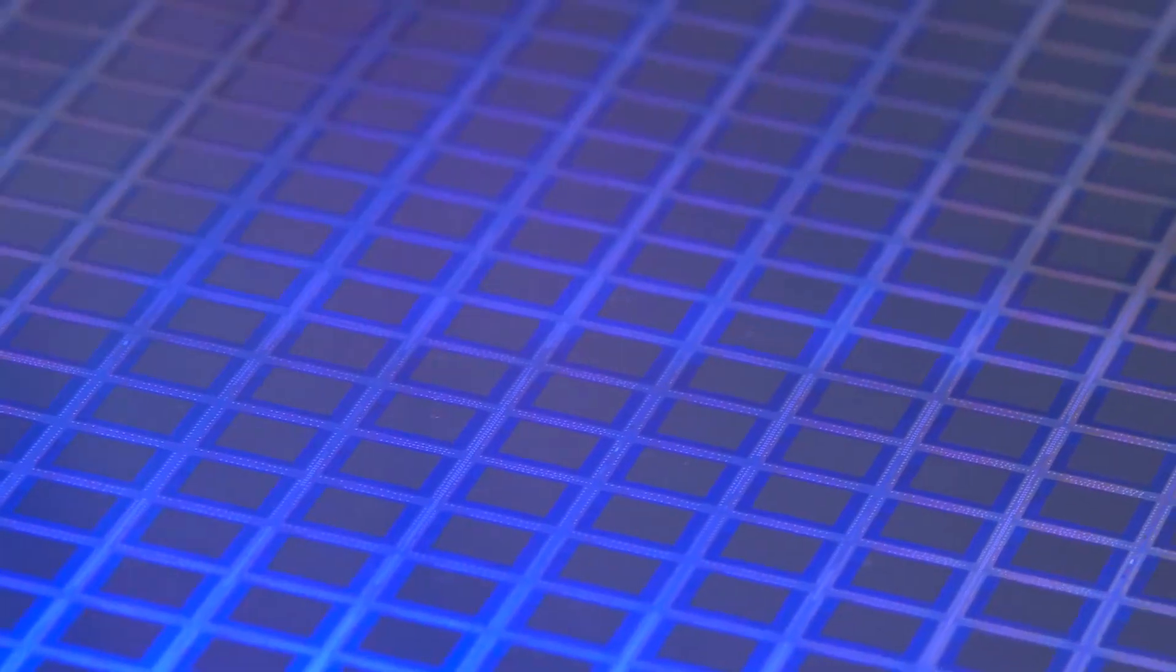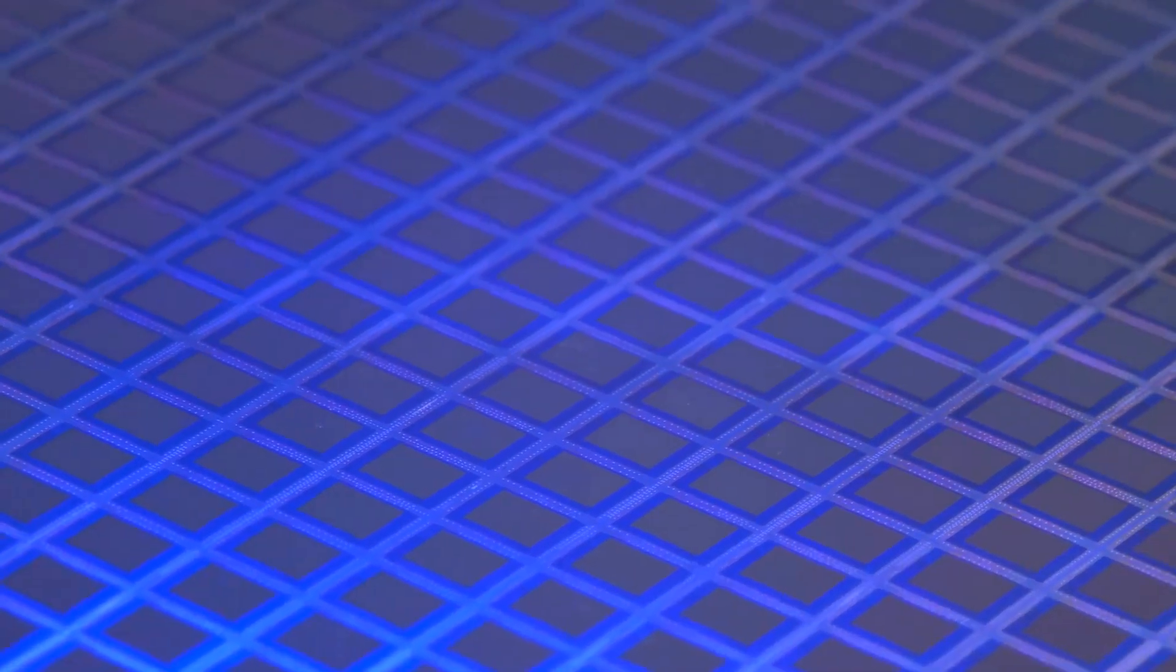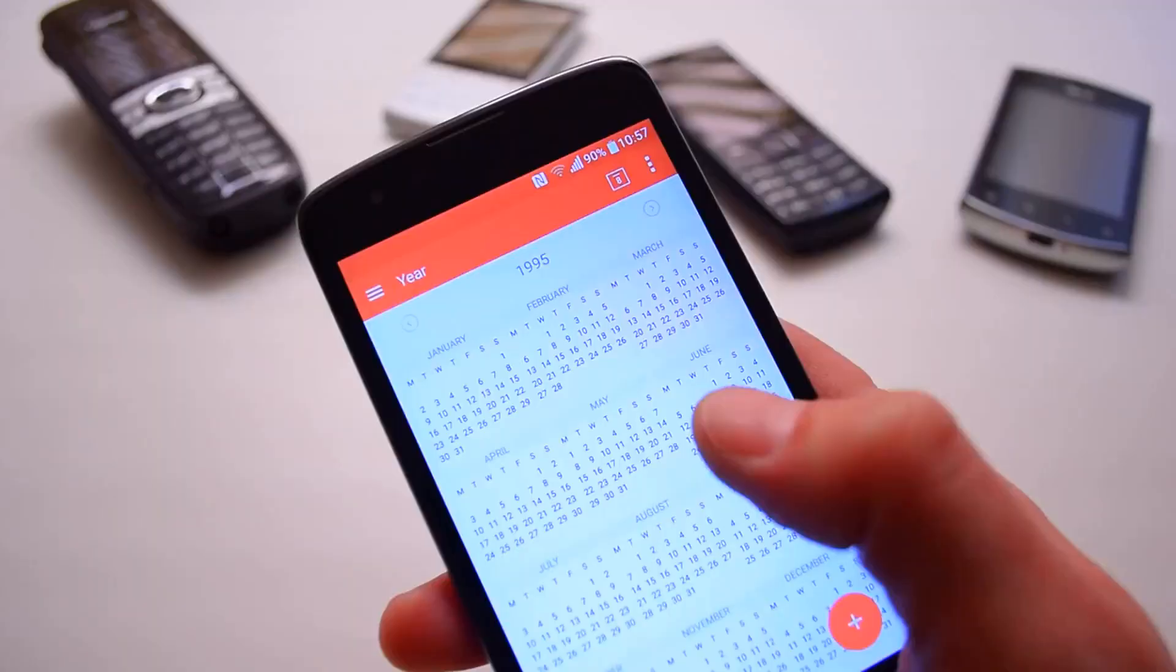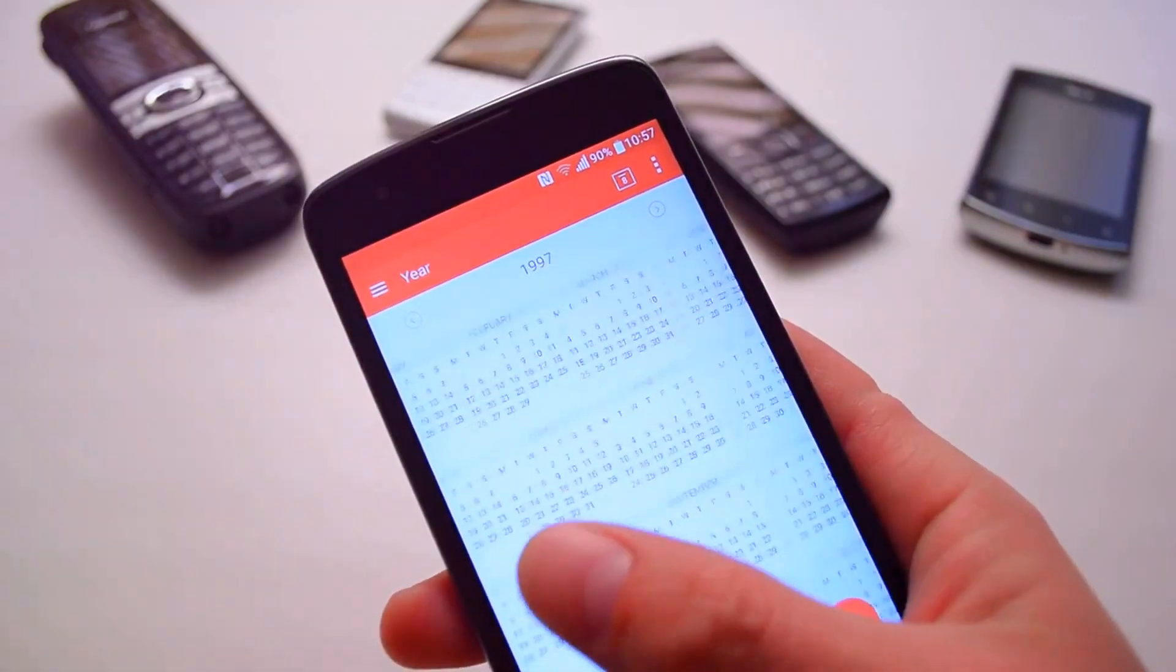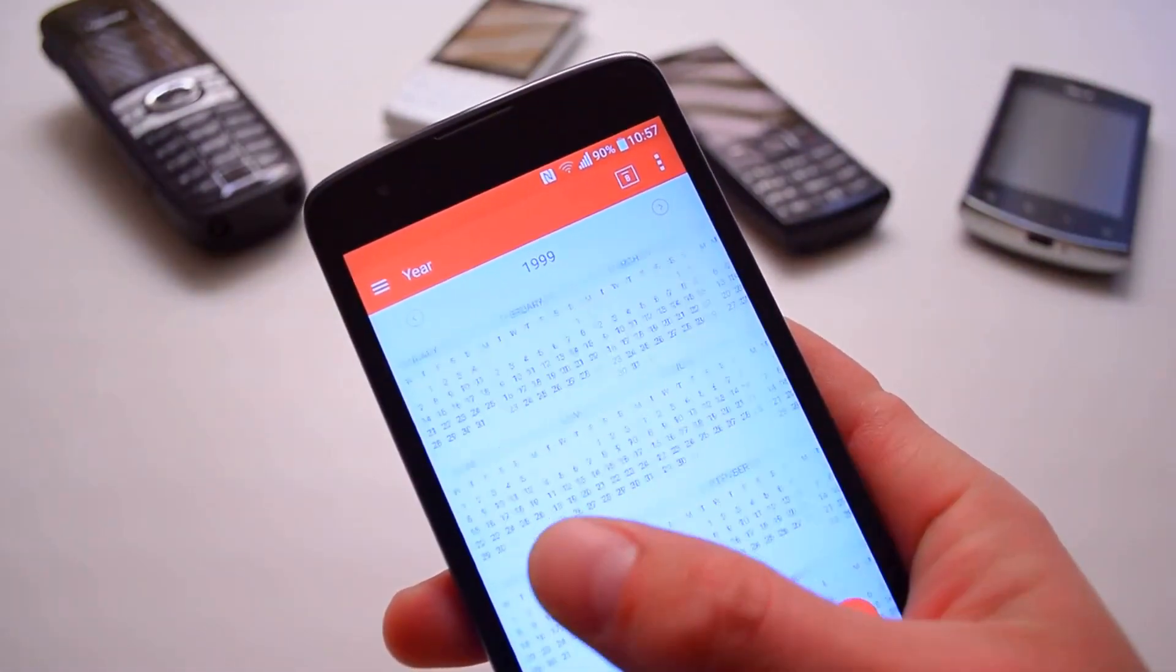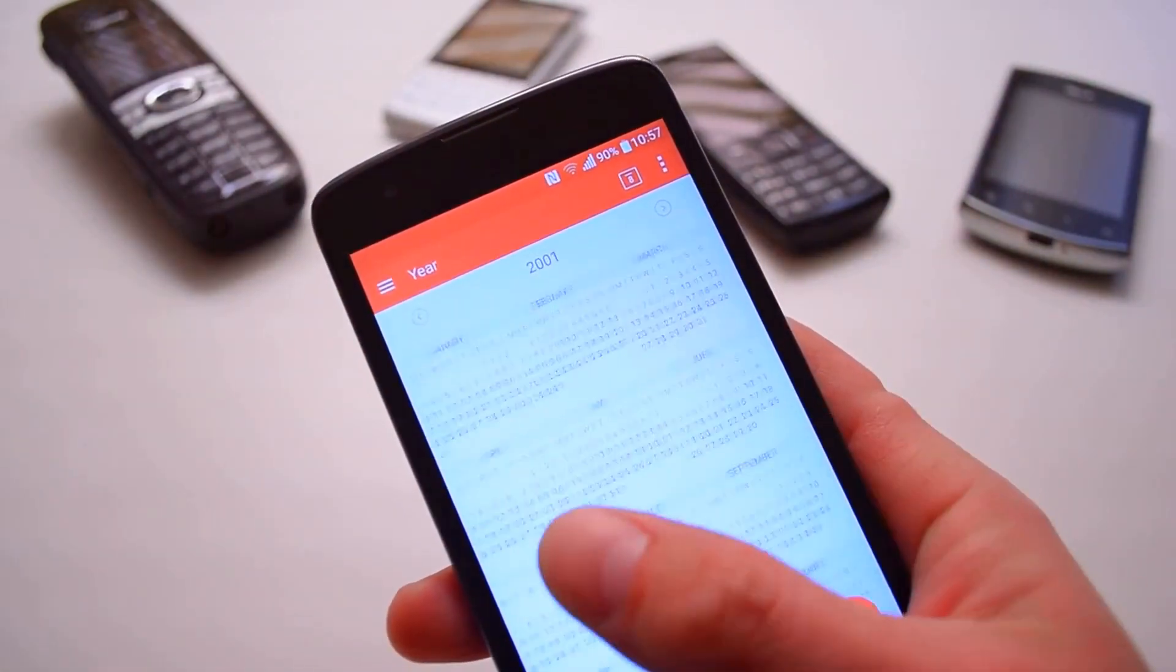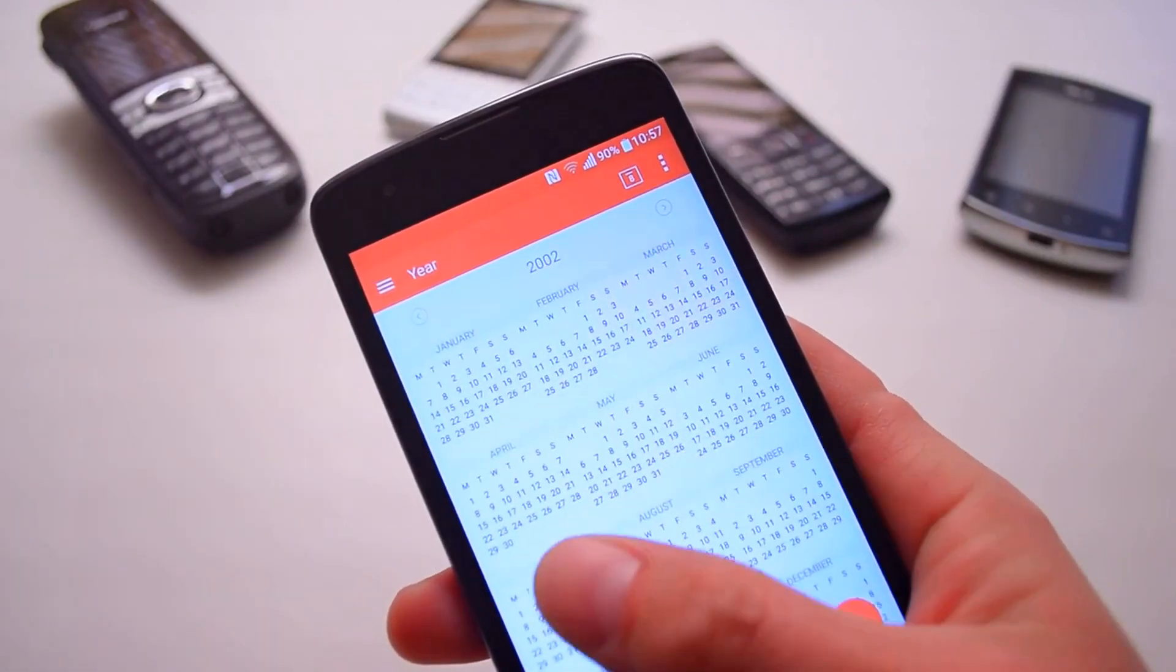The importance of this method cannot be overstated. It paved the way for the development of semiconductor devices like integrated circuits and solar cells. Without it, the landscape of modern technology would look vastly different. We owe much of our technological advancement to Czochralski's method, from the smartphones we use every day to the solar panels that power our homes.